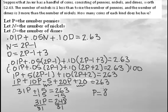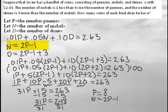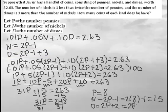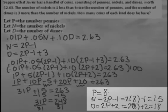Now we need to find the number of nickels and dimes. The number of nickels is n = 2p − 1 = 2(8) − 1 = 16 − 1 = 15. The number of dimes is d = 2p − 1 + 3 = 2(8) + 2 = 16 + 2 = 18. Therefore, the number of pennies is 8, the number of nickels is 15, and the number of dimes is 18.